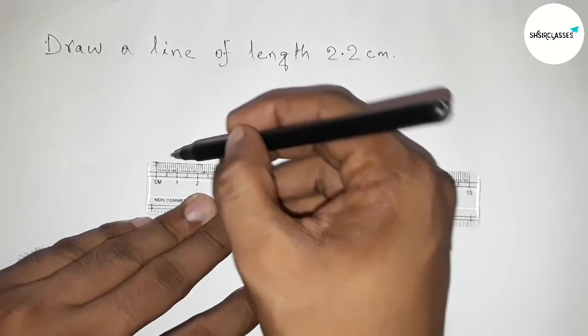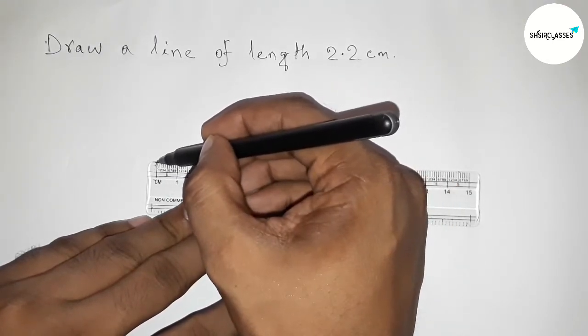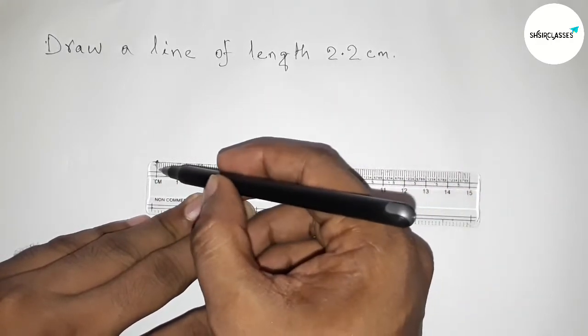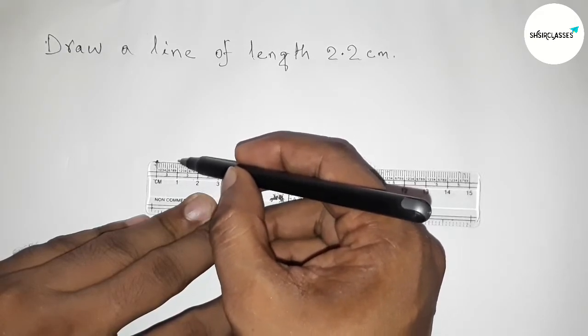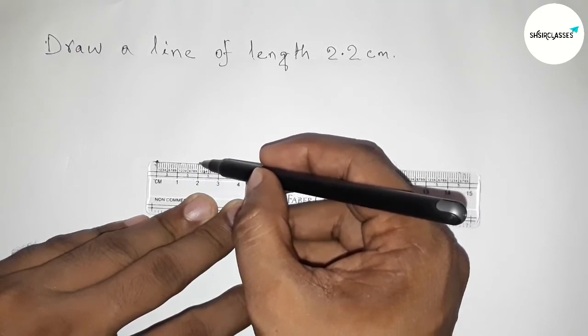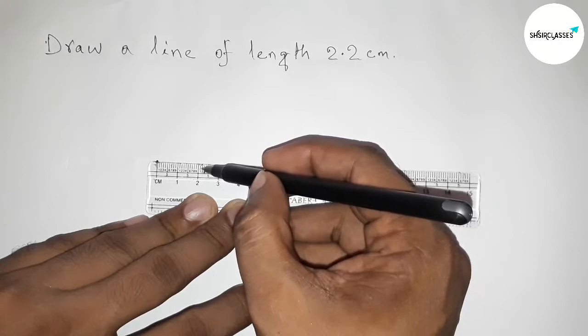This is starting at zero, so this is zero, and marking this. And here I am using a pen but you have to use a pencil. So this is one centimeter, and then this is two centimeters, and here counting one, two.